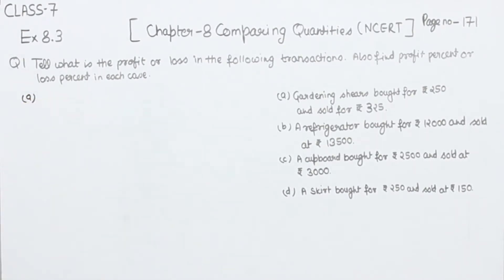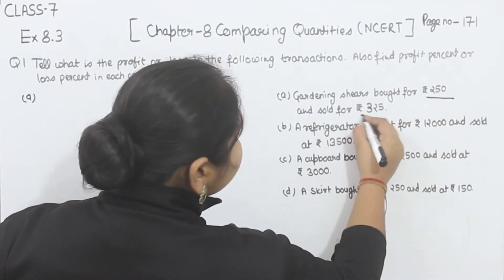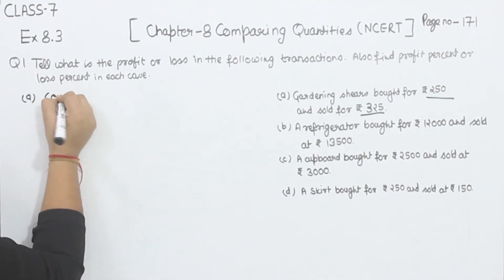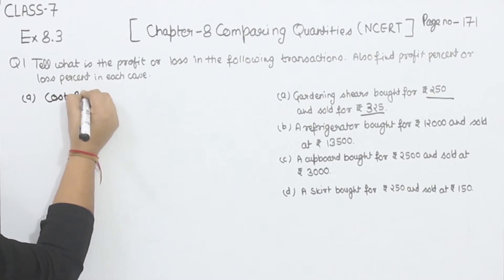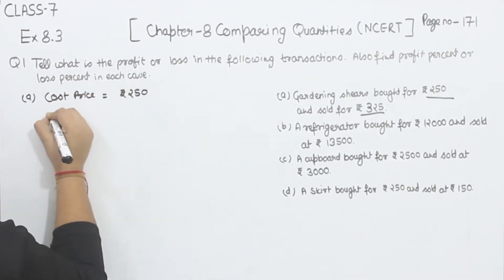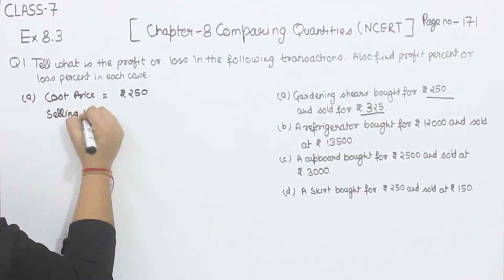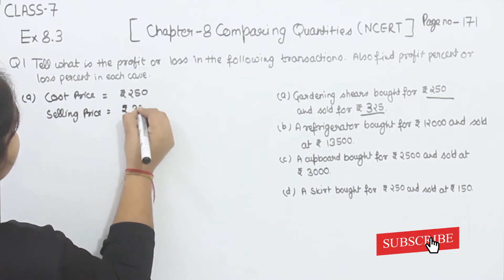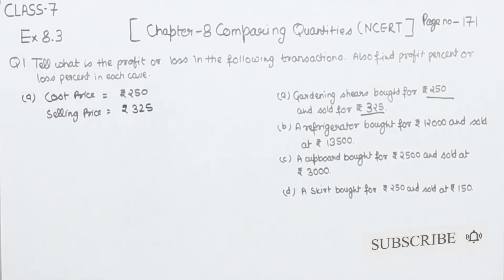In the first one, gardening shears brought for rupees 250 — this is the cost price — and sold for rupees 325 — this is the selling price. So, cost price is equal to rupees 250 and selling price is equal to rupees 325.